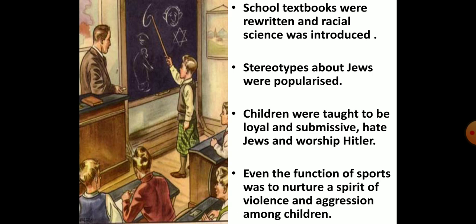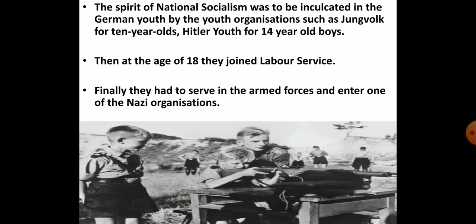To justify the Nazi idea of race, racial science was introduced. Children were taught to be loyal and submissive, to hate Jews and worship Hitler. Sports activities aimed to inculcate violence and aggression among children. Hitler believed that boxing could make children iron-hearted, strong and masculine. There were youth organisations to inculcate the spirit of National Socialism among German youth: Jung Folk for 10-year-olds, and at 14 years all boys had to join the Hitler Youth, a Nazi youth organisation. There they were taught to worship war, glorify aggression and violence, condemn democracy, and hate Jews, communists, gypsies and all others considered undesirable. Later, at 18 years, they had to join labour service, then serve the armed forces, and enter one of the Nazi organisations.